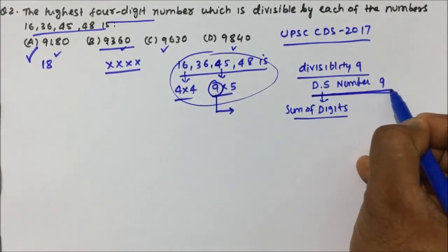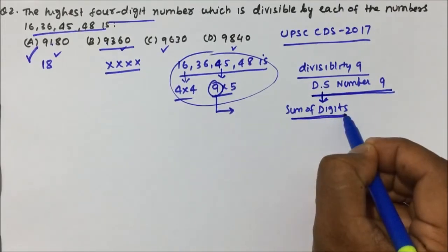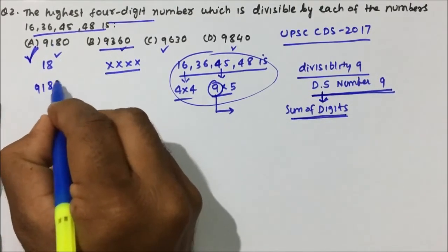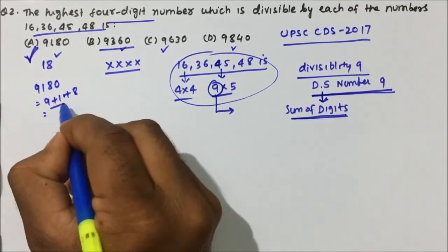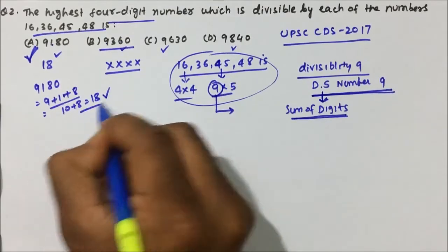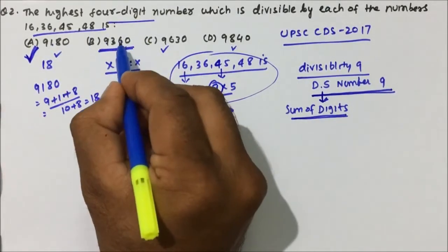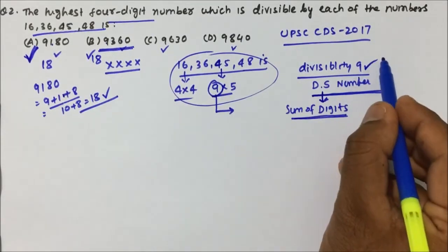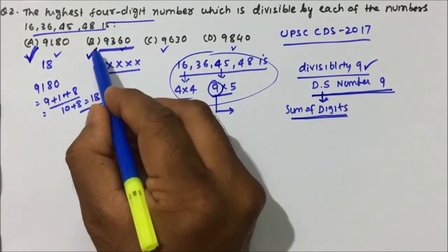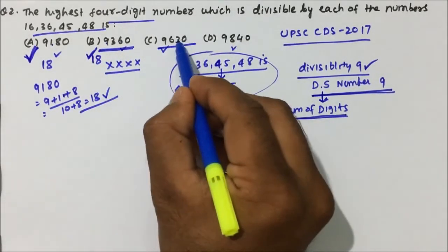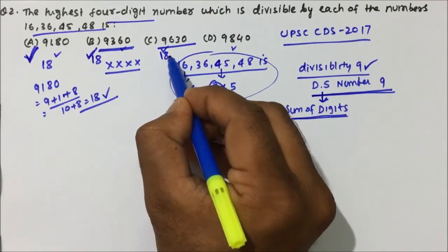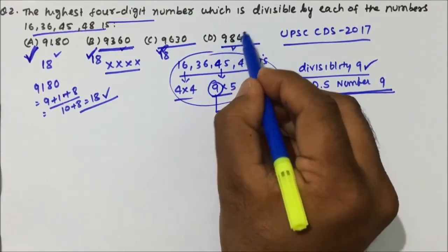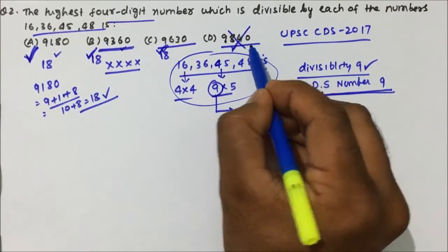The divisibility rule of 9 is that the digital sum — that is, the sum of digits — should be divisible by 9. Option A: 9+1+8+0 = 18, divisible by 9, so option A may be the answer. Option B: 6+3+9 = 18, also divisible by 9. Option C: 6+3+9 = 18, also divisible by 9. Option D: 8+4+9 = 21, and 21 is not divisible by 9, so option D is rejected.